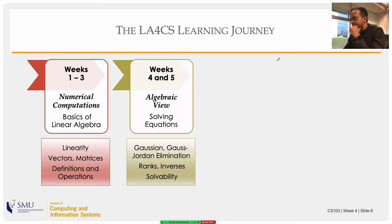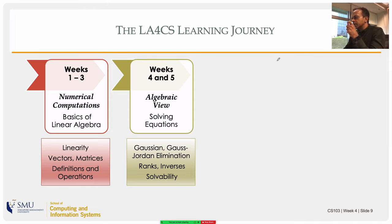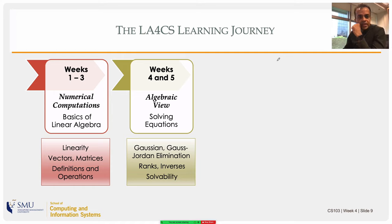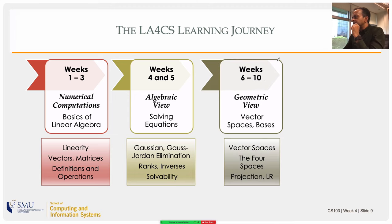Today is the first class of the next part of the book — the algebraic view — by which I mean solving equations. Today we will deal with Gaussian elimination, and along the way we will learn things like the rank of a matrix. Next week we will look at inverses in a more formal and complete way, and today we will also think about the solvability conditions of a system of linear equations.